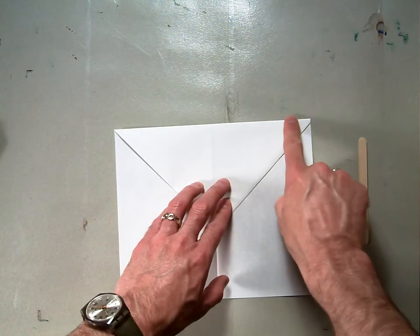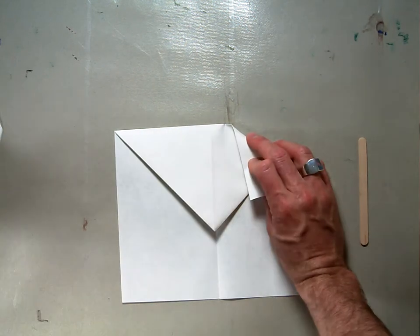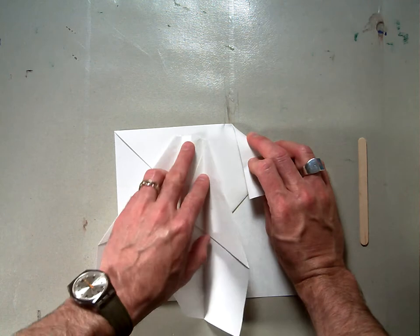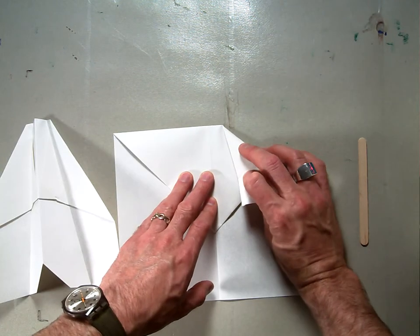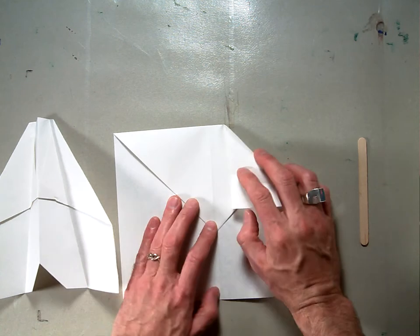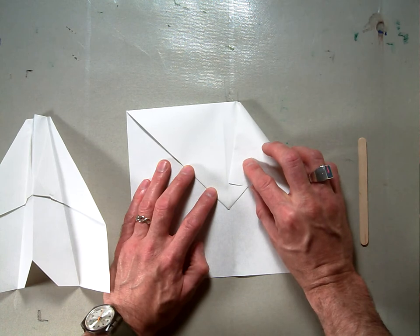Now we're going to bring this edge in and we're going to bring it in on a diagonal. This is going to form the underside of the plane. This is going to form the flat nose. So you can make it a little wider if you want. Make it a little shallower if you want. But what you need to do is have this corner that's right here, you need to have that right at the center line.